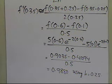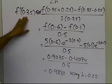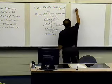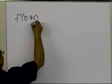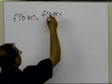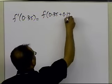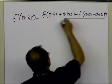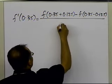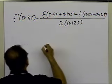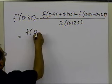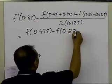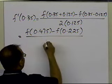The next step is to find the derivative at 0.35 again, but with the halved step size of 0.125. So f'(0.35) ≈ [f(0.35 + 0.125) − f(0.35 − 0.125)] / (2 × 0.125), which means I need the function at 0.475 minus the function at 0.225, divided by 0.25.